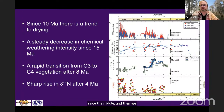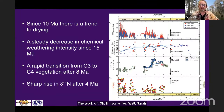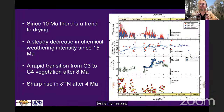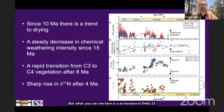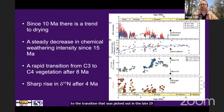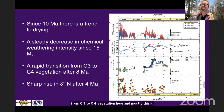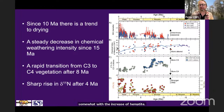We also saw this transition in vegetation. This is leaf wax carbon isotope data - the work of Sarah Feakins. What you can see is an increase in Delta 13C around eight to seven million years ago, quite close to the transition that was picked out in the late 1980s in the Himalayan foreland in the Shivaliks. That is being interpreted as a transition from C3 to C4 vegetation, and mostly this is interpreted to indicate drying. This drying does seem to correlate somewhat with the increase of hematite, but it doesn't seem to have much impact on the chemical weathering.